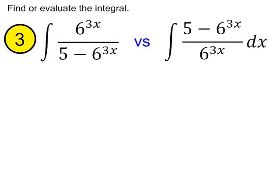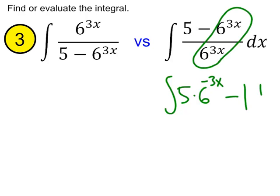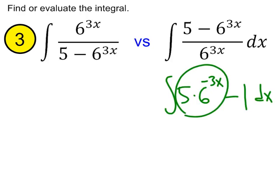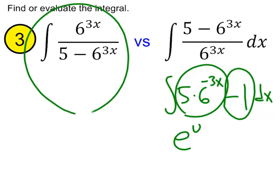Notice that the one on the right, we'd probably rewrite this. We'd probably rewrite that as 5 times 6 to the negative 3x minus 1 dx. And then, notice that this first term is just of the e to the u variety. It's kind of like our exercise number one in this video. And, of course, this is easy to anti-derive. So, we'd proceed from there. But, we're going to find that the one on the left is going to take, again, a different approach.